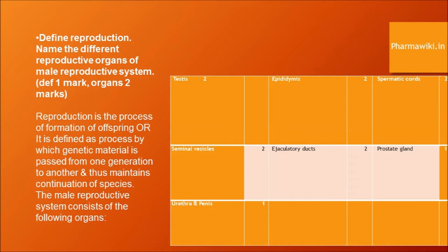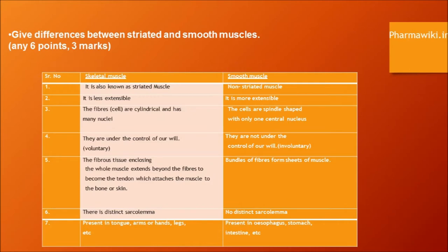Differences between striated and smooth muscles. Skeletal muscles are also known as striated muscles; smooth muscles are non-striated muscles. Skeletal muscles are less extensible than smooth muscles. The fibers are cylindrical and have many nuclei in skeletal muscles, but the cells are spindle-shaped with only one central nucleus in smooth muscles. Skeletal muscles are under control of our will — these are voluntary — while smooth muscles are not under control of our will and are called involuntary. The fibrous tissue enclosing the whole muscle extends beyond the fibers to become the tendon, which attaches the muscle to bone or skin.